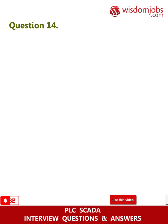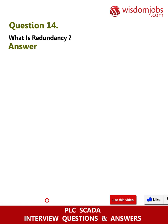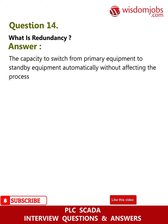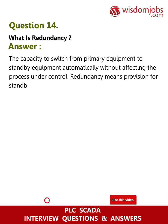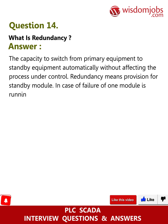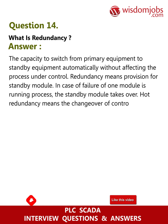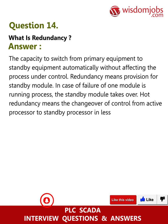Question 14: What is redundancy? Answer: The capacity to switch from primary equipment to standby equipment automatically without affecting the process under control. Redundancy means provision for a standby module in case of failure — if one module fails during a running process, the standby module takes over. Part redundancy means the changeover of control from the active processor to the standby processor in less than one scan time.